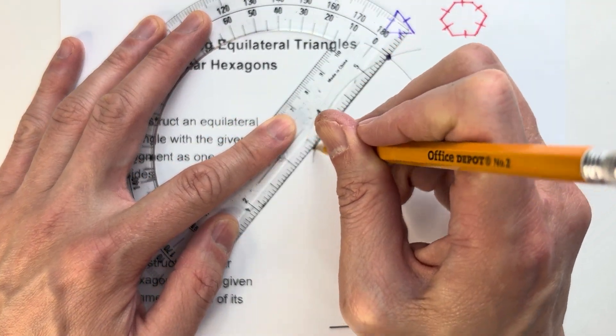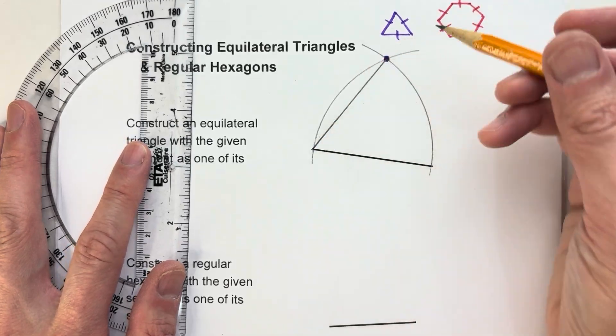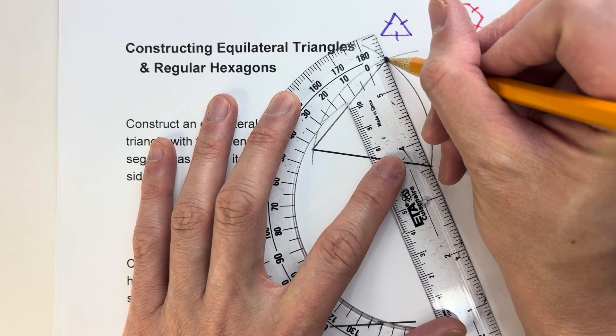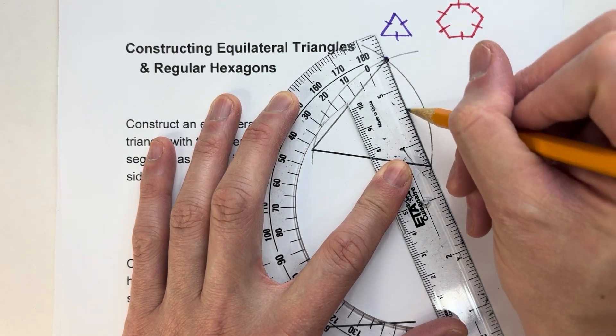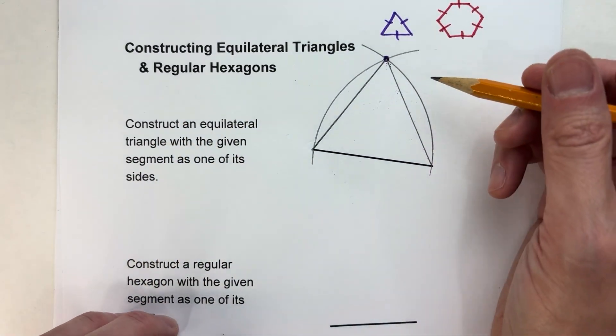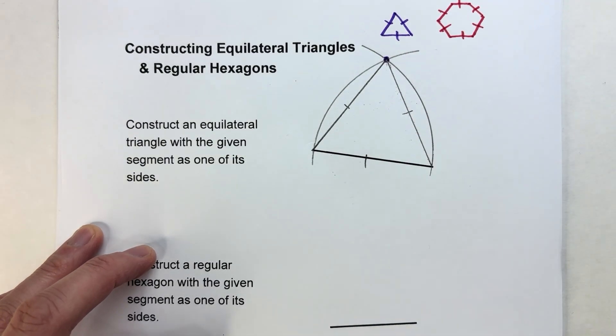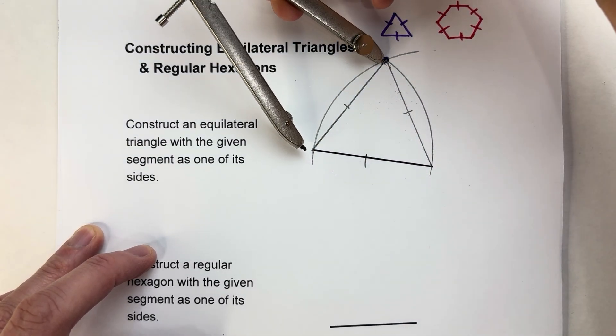If I connect this here, that's one side of my triangle that is that distance long. And I connect these two points right there and there's the other side of my triangle. Notice we now have an equilateral triangle and all sides are the same length.